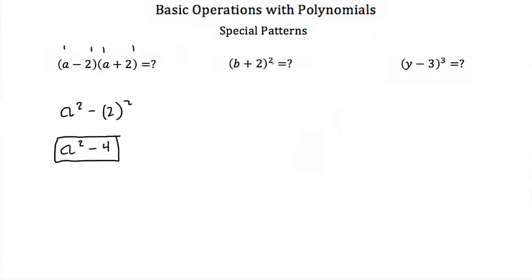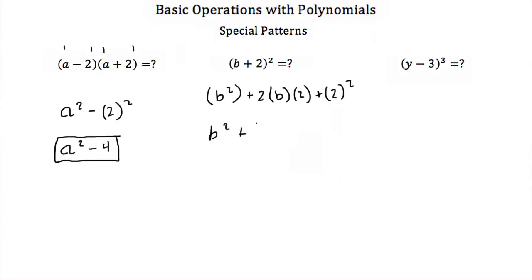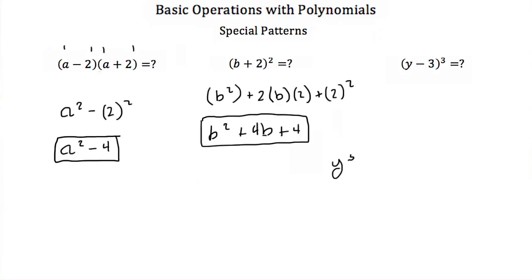Two squared is 4, so this simplifies to a squared minus 4. Next, we have b plus 2 squared, which comes out to b squared plus 2 times b times 2, plus 2 squared. Simplifying gives us b squared plus 4b plus 4.